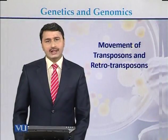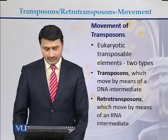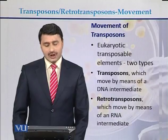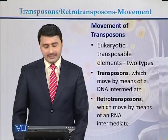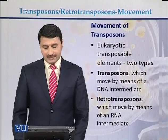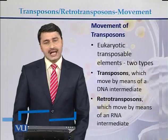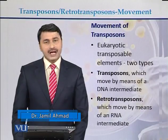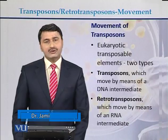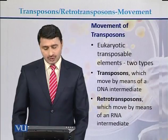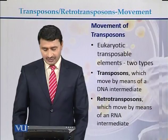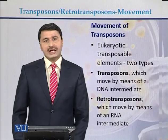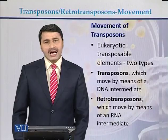Eukaryotic transposable elements are of two types. The first type are transposons, which move by means of a DNA intermediate. The second type are retrotransposons, which move by means of an RNA intermediate. In retrotransposons, the DNA moves from one place to another through an RNA intermediate.